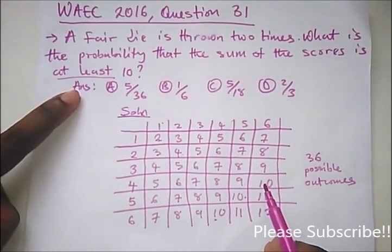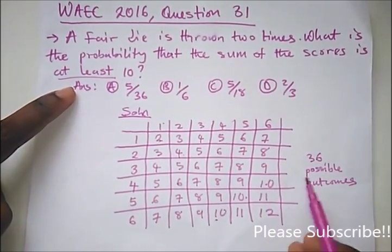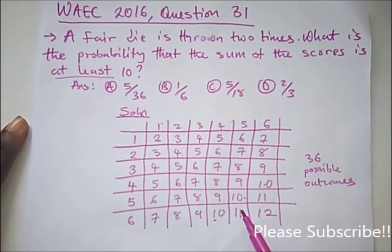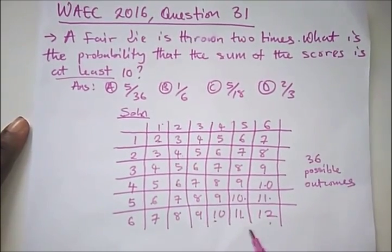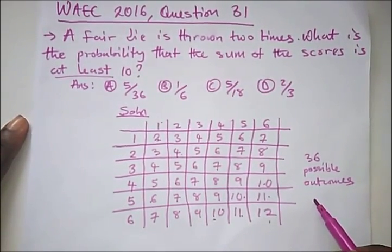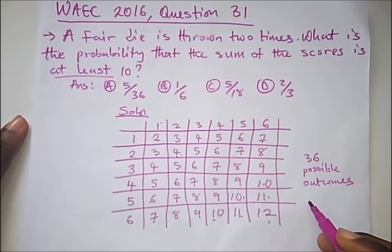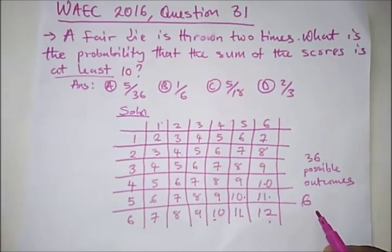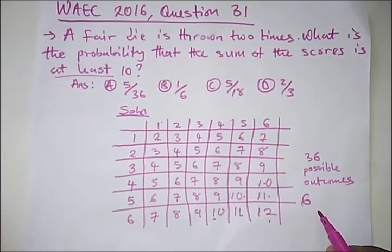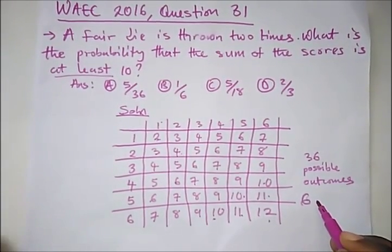The question says at least 10, so it means 10 and above. And so what are the numbers greater than 10? We have 11, 11, and 12. So there are 6 outcomes that will produce the sum of at least 10. The sum of the scores which is at least 10. So there are 6 outcomes.